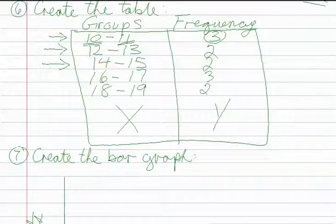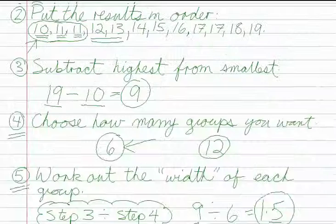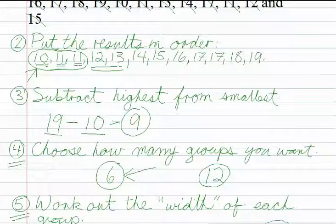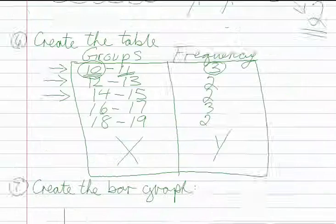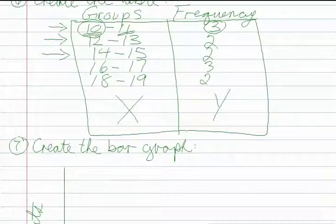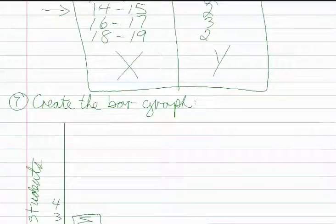And basically you build all the groups the same way. The first number in your first group has to be the lowest number that we had in step two. So 10 here is our lowest number, so that needs to be the first number in our first group. Now step seven will come next.